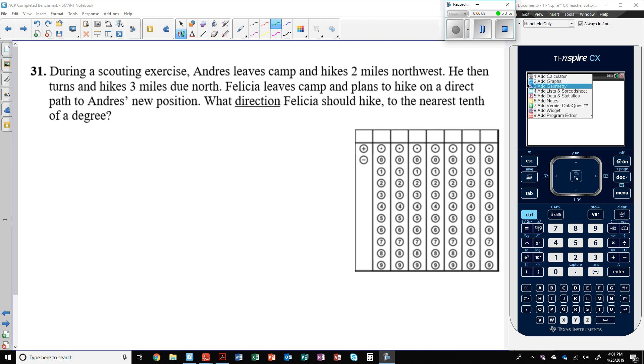He then turns and hikes three miles due north. Felicia leaves camp and plans to hike directly on a direct path to Andres' new position. What direction should Felicia hike to the nearest tenth of a degree?